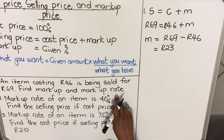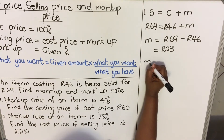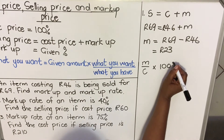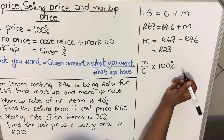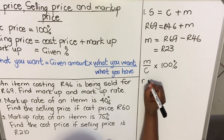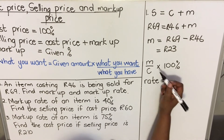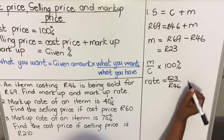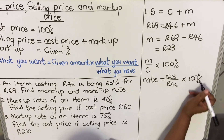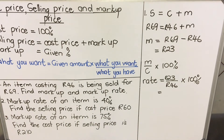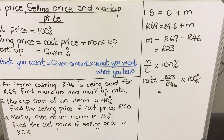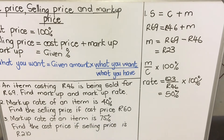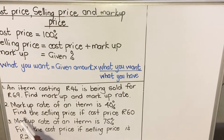The second part asks about the markup rate, the percentage. The markup rate is the markup price divided by cost price, multiplied by 100 percent. So the markup rate equals our markup price of 23 rands divided by our cost price of 46, multiplied by 100 percent. 23 divided by 46 multiplied by 100 is 50 percent. So the markup rate is 50 percent.